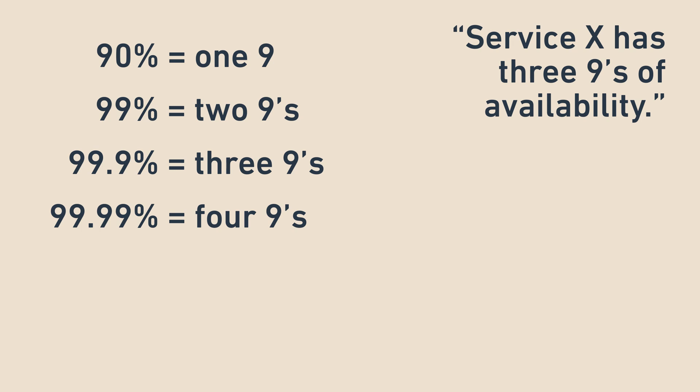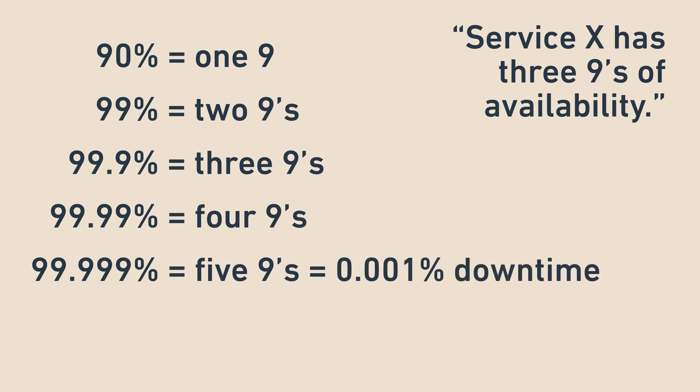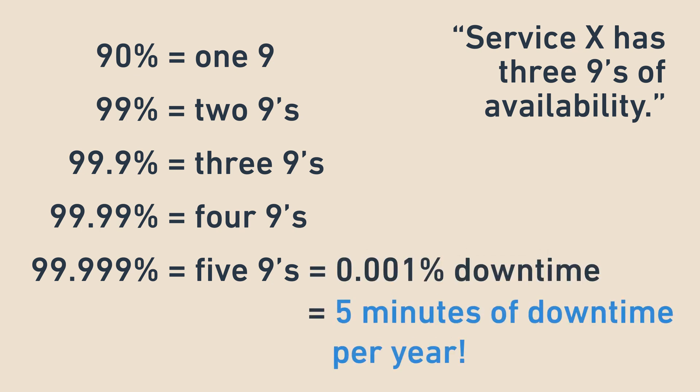Achieving higher availabilities is quite challenging. For example, five 9s or 99.999% means that a system is only down 0.001% of the time, which is 5 minutes per year.